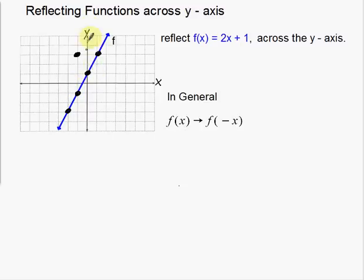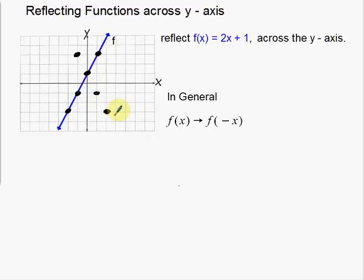Points that are on that axis are just going to stay right there — that one's not going to move at all. This one down here is 1 away from the line of reflection, so over here it's going to be just 1 away. Same thing here — this one is 2 away from the line that I'm reflecting across, so over here it's going to be 2 away. Now I have a couple of dots, and my new function is right here.